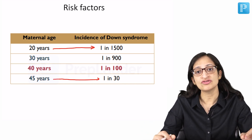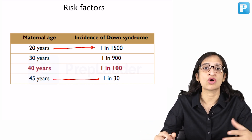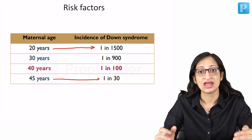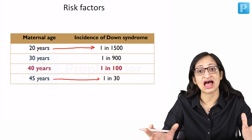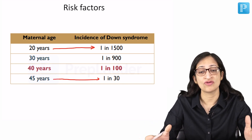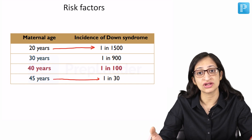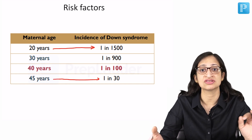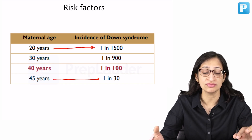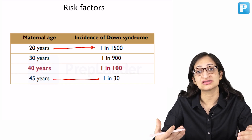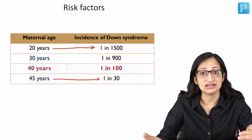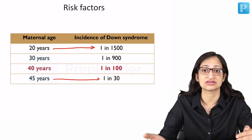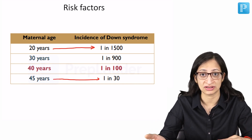Apart from that, if a couple already has a child with Down syndrome and they are carriers of any translocation of chromosome 21 with some other chromosome, then there is an increased risk of Down syndrome in the next pregnancy as well.